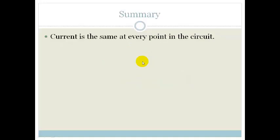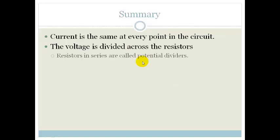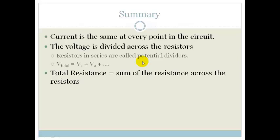So let's summarize. First of all the current is the same at every point in the circuit. But the voltage is divided across the resistors. So the resistors in series are called potential dividers. So V total is equal to V1 plus V2. So total resistance can be calculated as the sum of the resistance across the resistors.